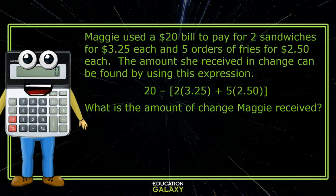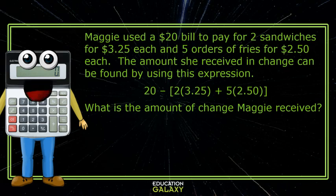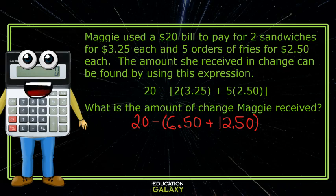Let's check out this word problem now. Maggie used a $20 bill to pay for two sandwiches for $3.25 each and five orders of fries for $2.50 each. The amount she received in change can be found by using this expression. Computing the multiplication inside the brackets: 2 times $3.25 gives us $6.50, and 5 times $2.50 gives us $12.50. Adding the values gives us $19. Last, we subtract 20 minus 19 and we get $1, which is our answer.